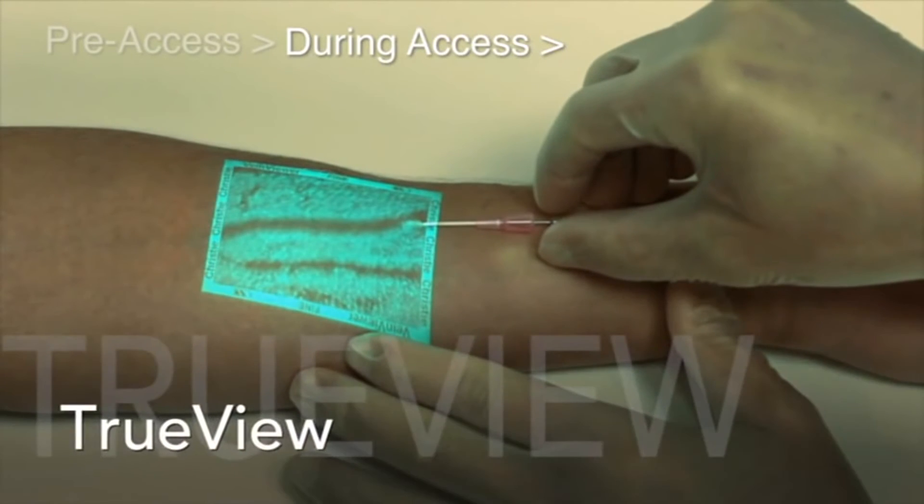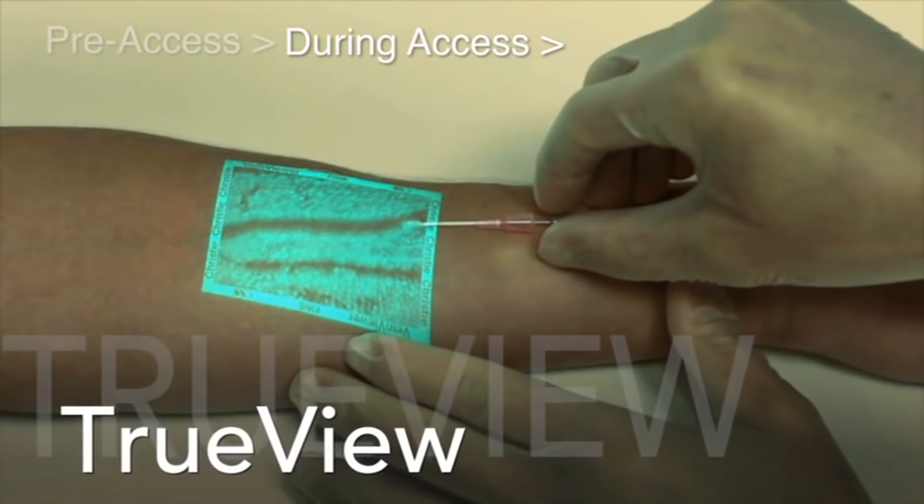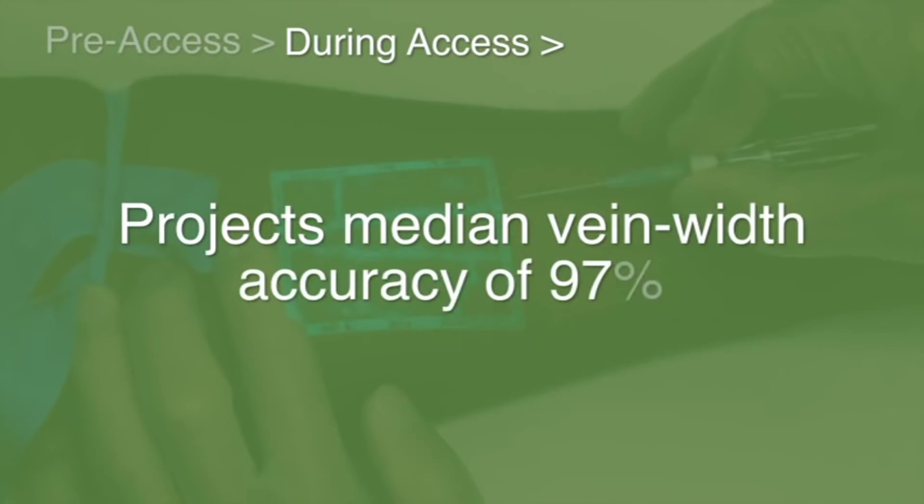During access, only VeinViewer's TrueView technology projects a median vein width accuracy of 97%, delivering an image you can trust to help you choose the most appropriate catheter size for improved dwell times.